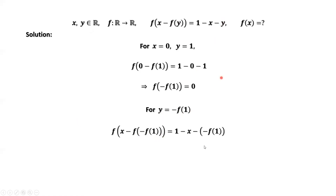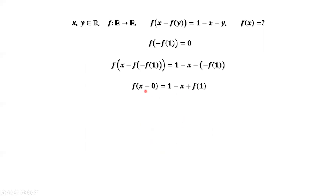Here, we replace y by negative f of 1. What is this part? f of negative f of 1, which is 0. This part is 0. Therefore, we have f of x minus 0 equals 1 minus x plus f of 1. This result is very close to the result we need to find. f of x equals 1 minus x plus f of 1.